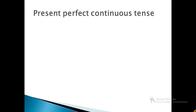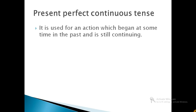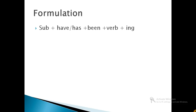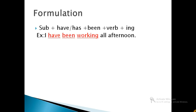The next and last one, present perfect continuous tense. The present perfect continuous tense is used for an action which began at some time in the past and is still continuing. For example, they have been playing since 4 o'clock. Formulation of present perfect continuous tense: for positive statements, we use subject plus have or has plus been plus verb plus ing. For example, I have been working all afternoon.